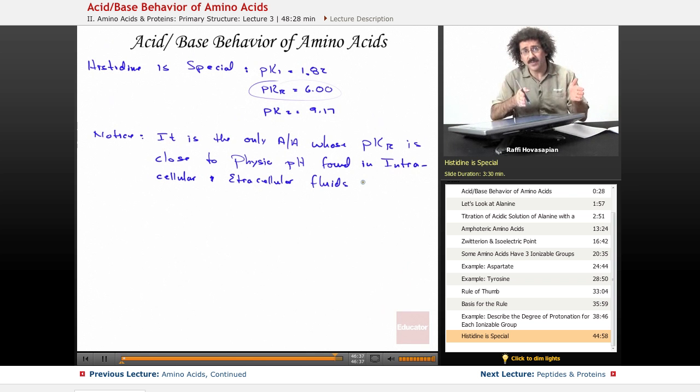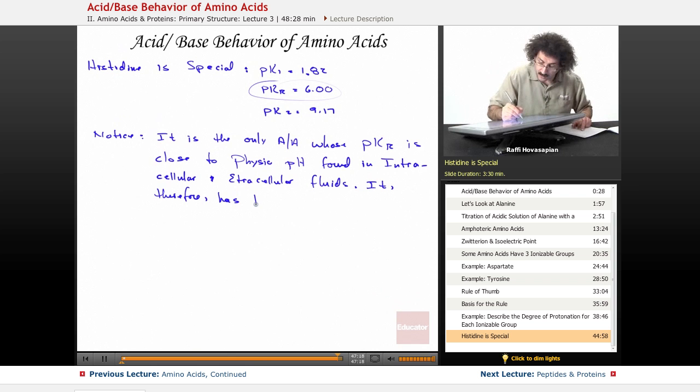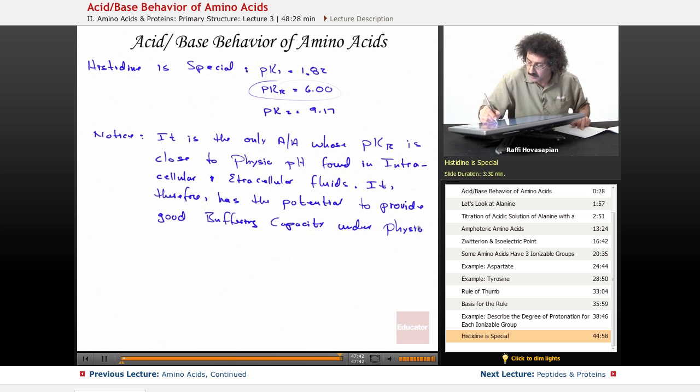Found in intracellular and extracellular fluids. So, the fluid inside the cell, the fluid outside the cell, physiological pH. This is the only amino acid whose pKR is actually close to the physio pH. It is, therefore, has the potential to provide good buffering capacity. Good buffering capacity under physiological conditions.